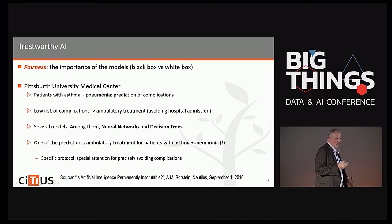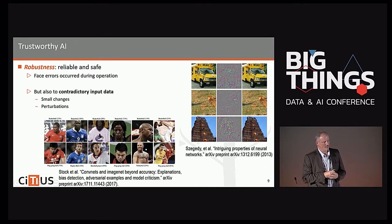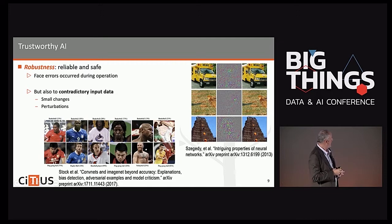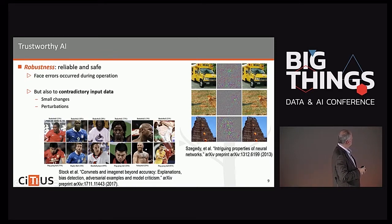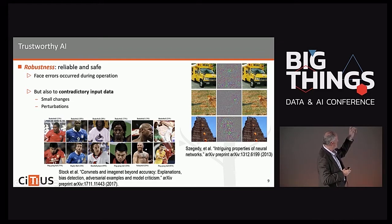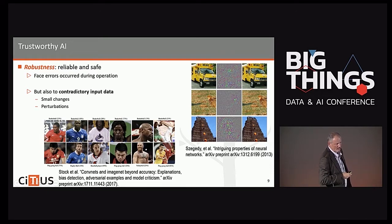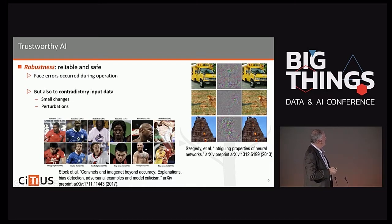Turning to robustness — AI systems should be reliable and safe. A well-known example involves image classifiers: images on the left are classified correctly, but when perturbed with a pattern in the middle, the images look similar to human eyes yet the neural network misclassifies all of them — in one case classifying everything as ostrich. A recent study on CT lung images showed that artificially introduced fake cancerous nodes misled radiologists 90% of the time, while erasing a real nodule led to a healthy diagnosis in 94% of cases.